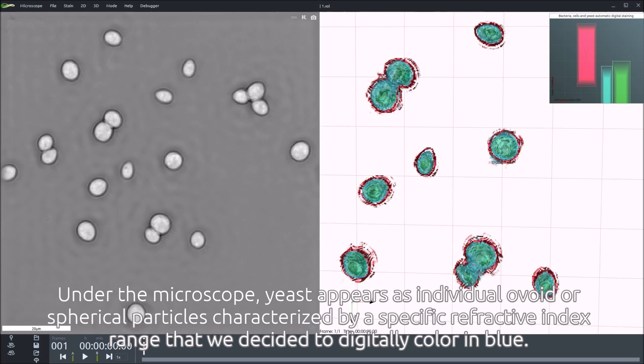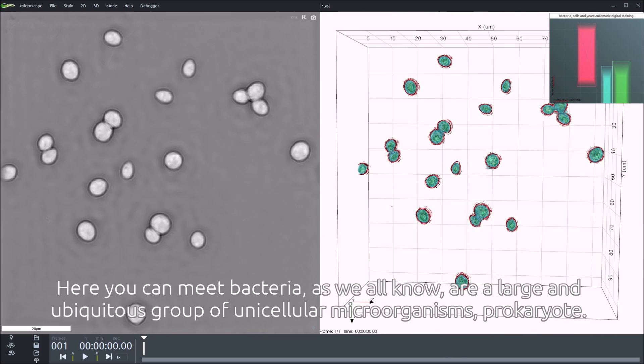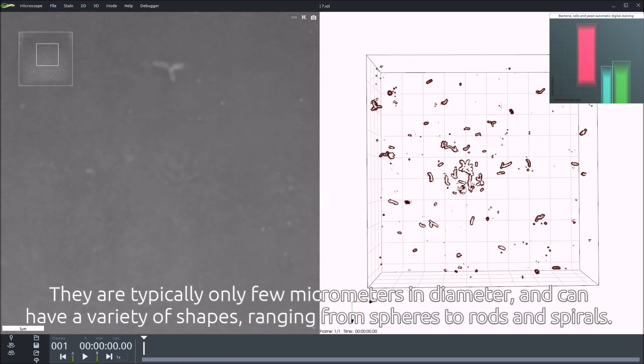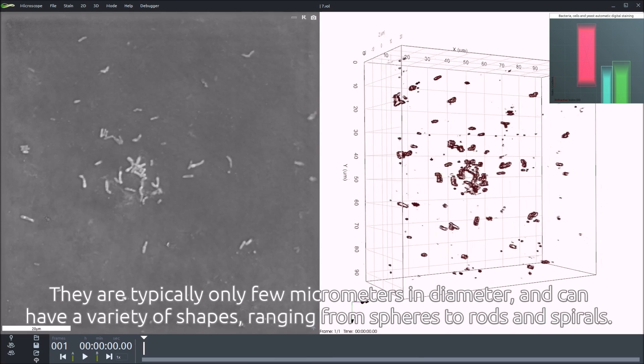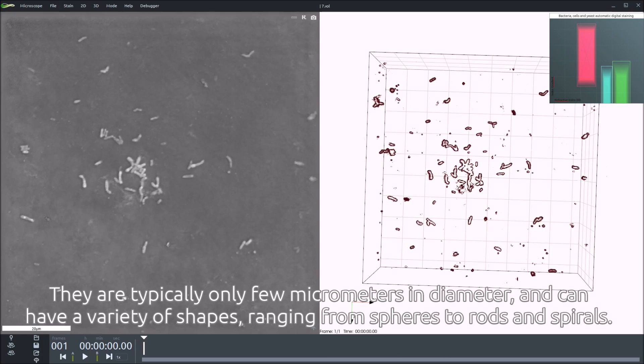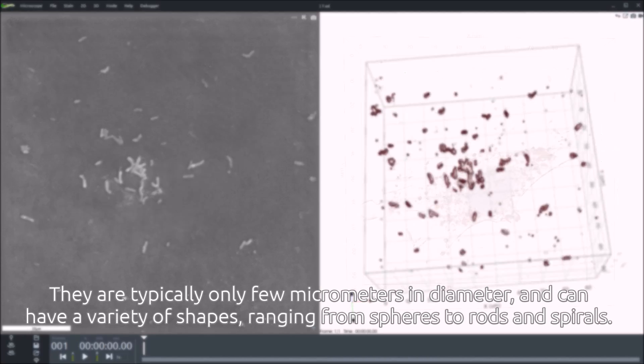Here you can meet bacteria, as all we know are a large and ubiquitous group of unicellular microorganisms, prokaryotes. They are typically only few micrometers in diameter and can have a variety of shapes, ranging from spheres to rods and spirals.